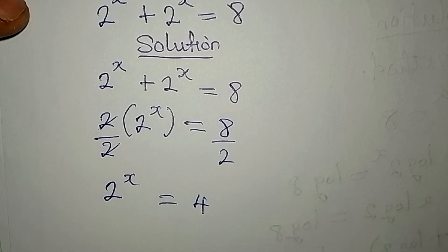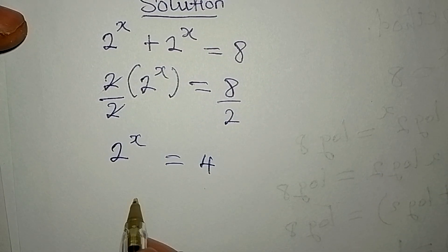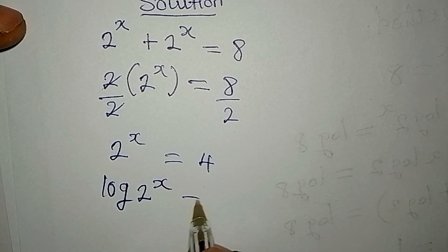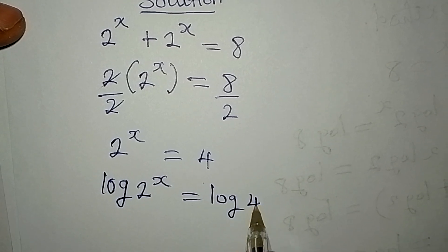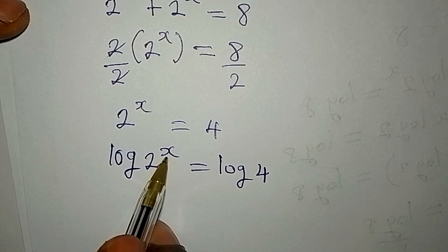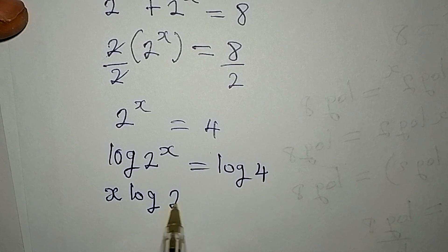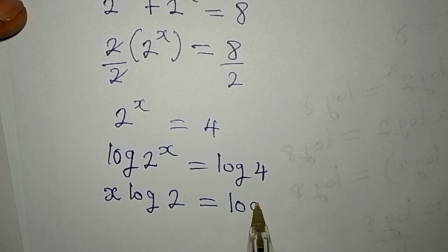Remember I said we are going to introduce log. So at this point we can take log of both sides: log 2 to power x equals log 4. Now the power goes in front, so we have x log 2 equal to log 4.